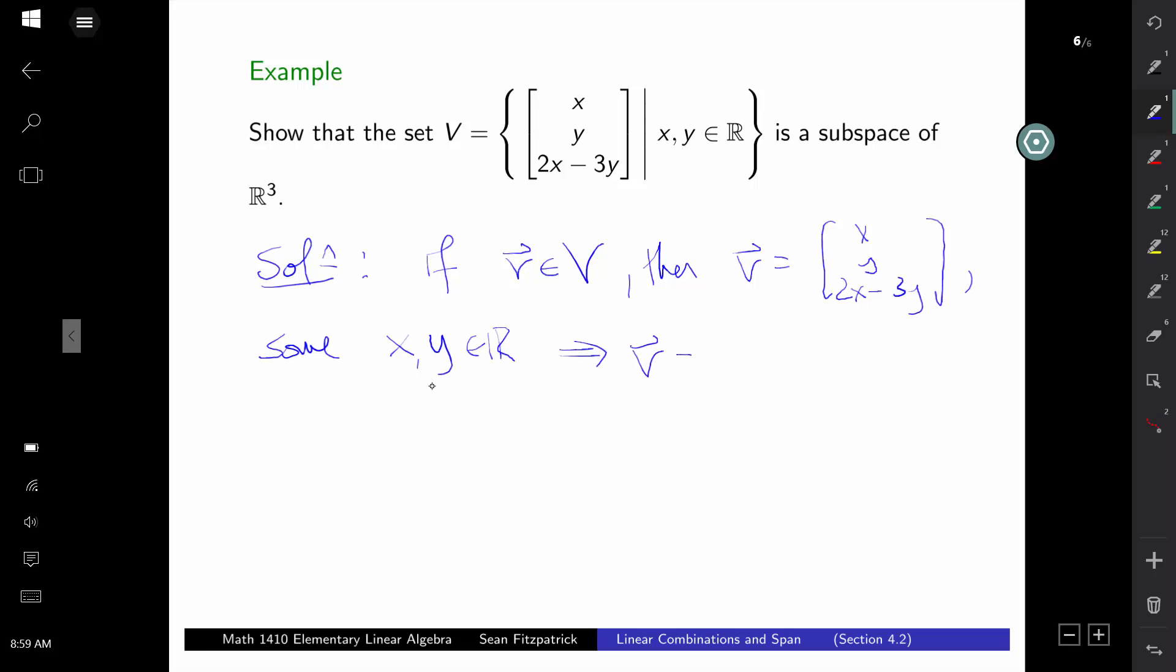If V is any vector in V, then I know that I can write V as (x, y, 2x - 3y) for some real numbers x and y. But that tells me that I can write V by splitting it up like this. It's going to be (x, 0, 2x) plus (0, y, -3y). So in the first vector, I put everything that depends on x. In the second vector, I put everything that depends on y. And now I can write this as x times (1, 0, 2) and I can write this as y times (0, 1, -3).